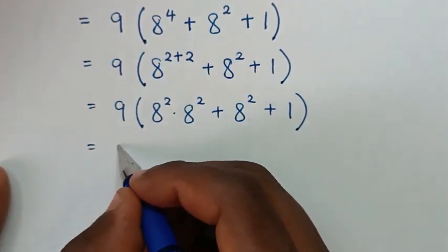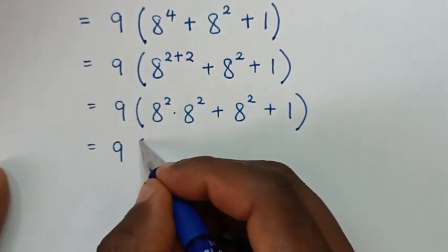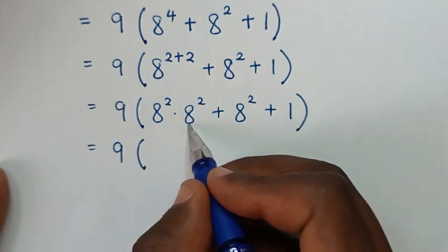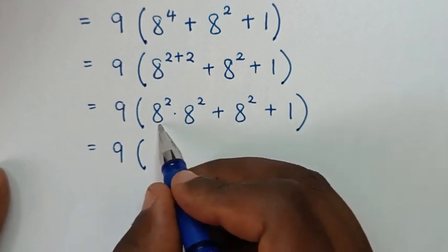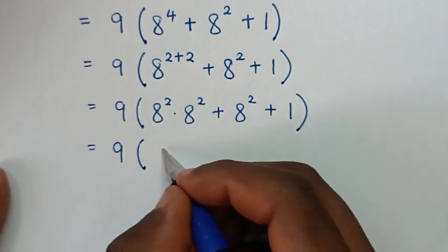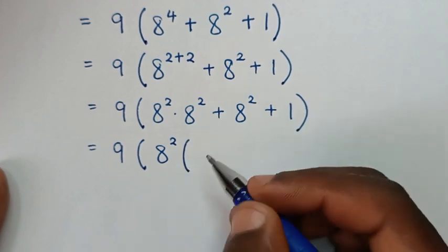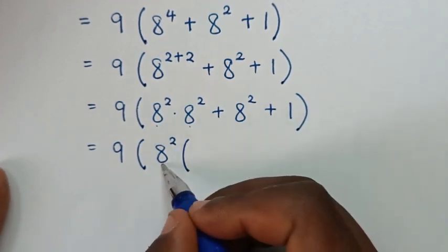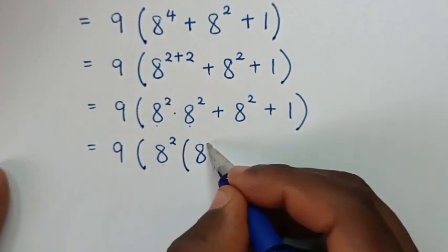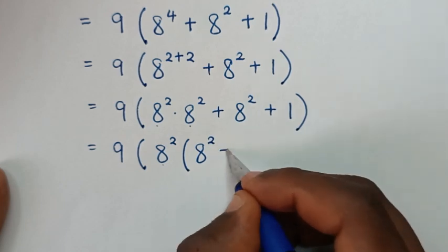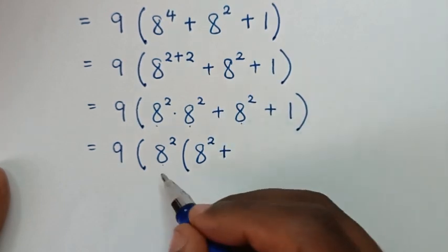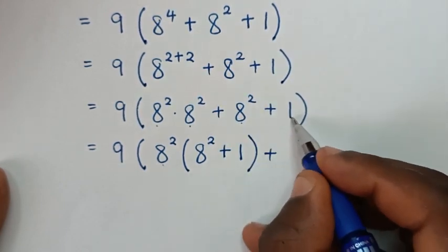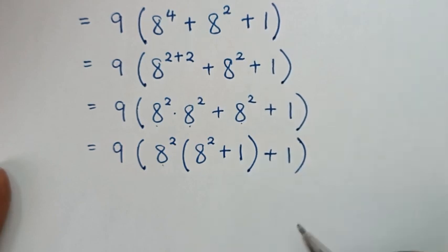Then it will be equal to 9 bracket: 8 power 2 times 8 power 2 divided by 8 power 2 is 1, times 8 power 2, plus 8 power 2 divided by 8 power 2 is 1, bracket, then plus 1, bracket. Then it will be equal to 9 bracket: 8 power 2 — or 8 power 2 — is 64, bracket, 8 power 2 is 64, then plus 1, bracket, plus 1, bracket.